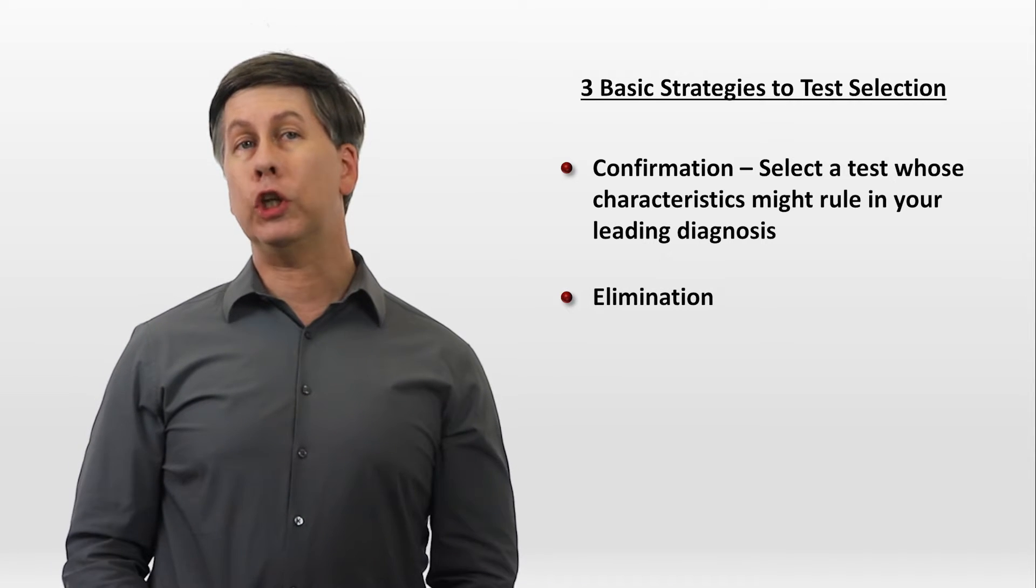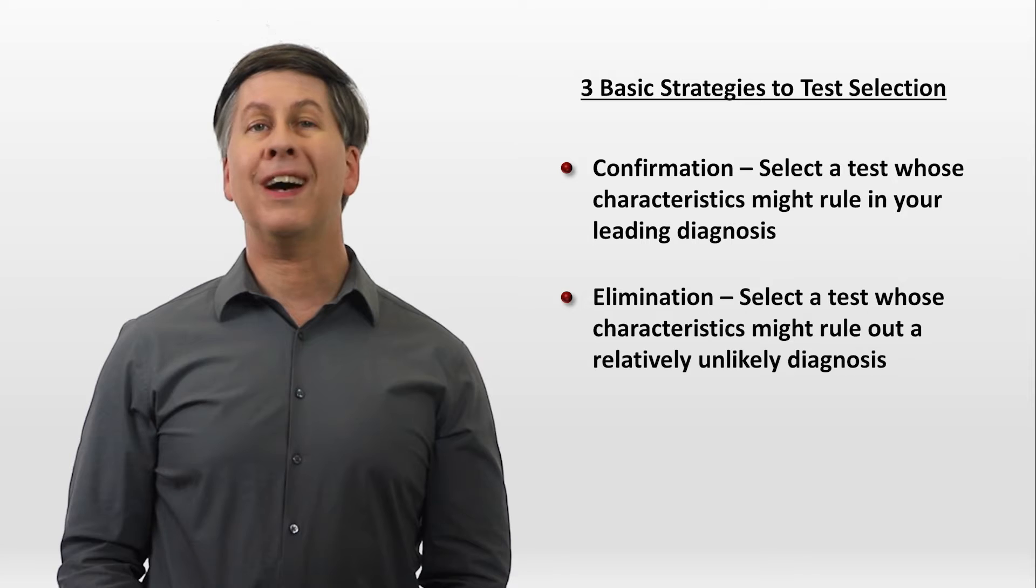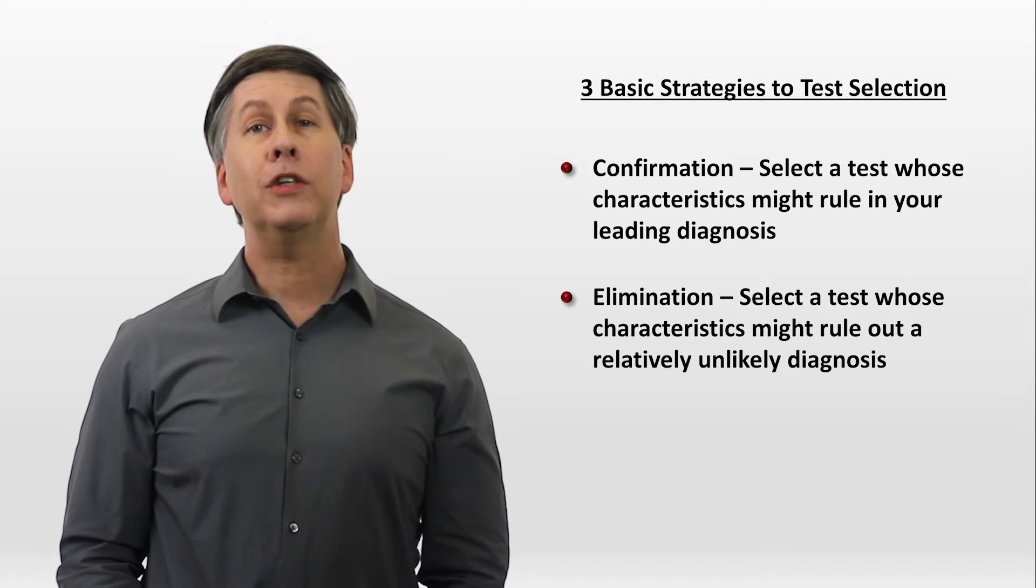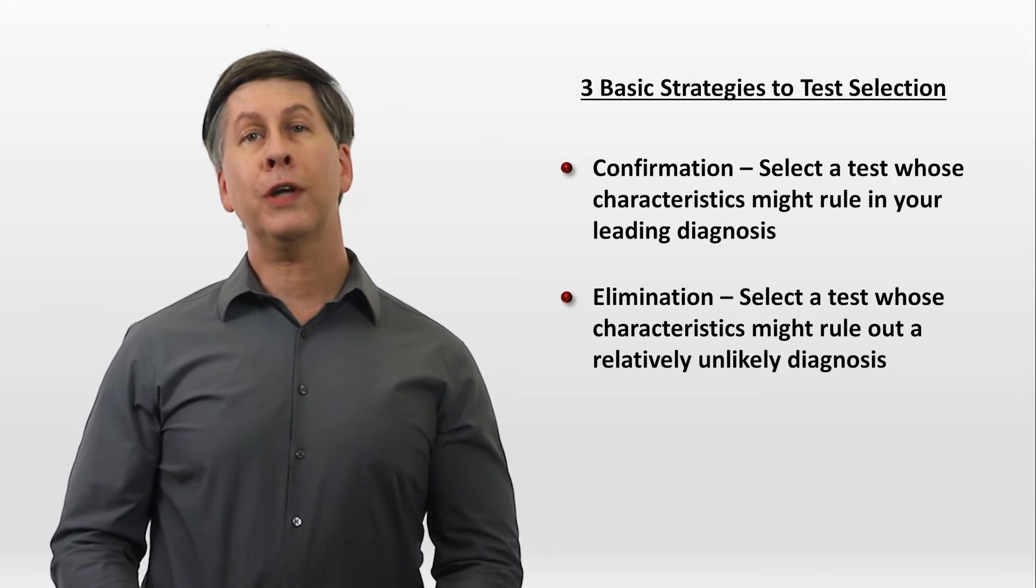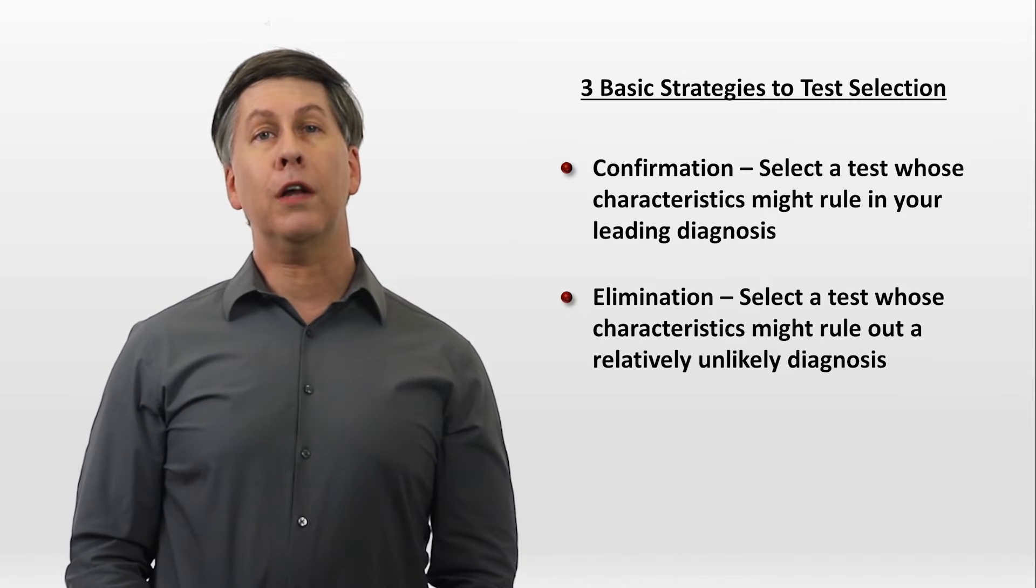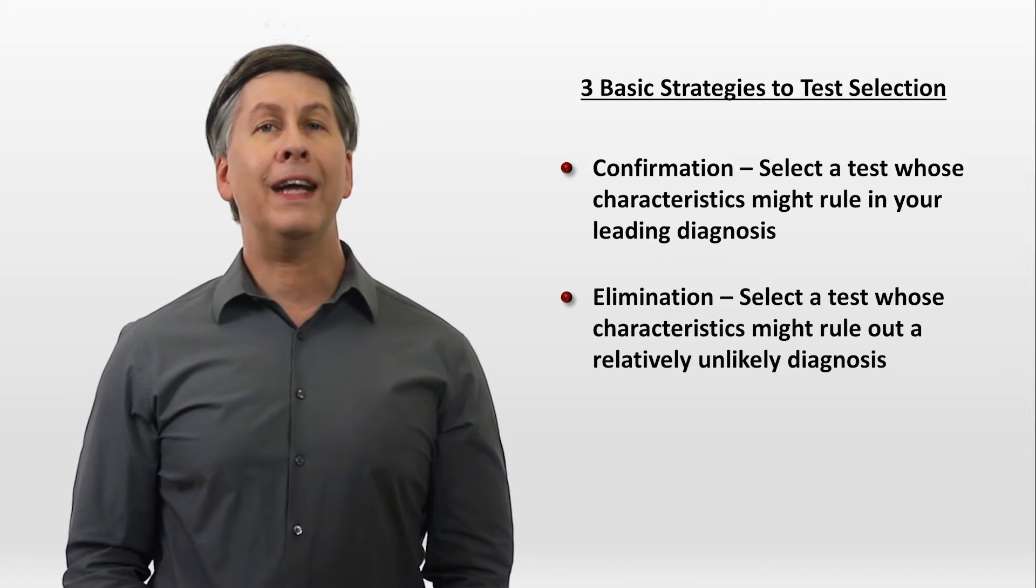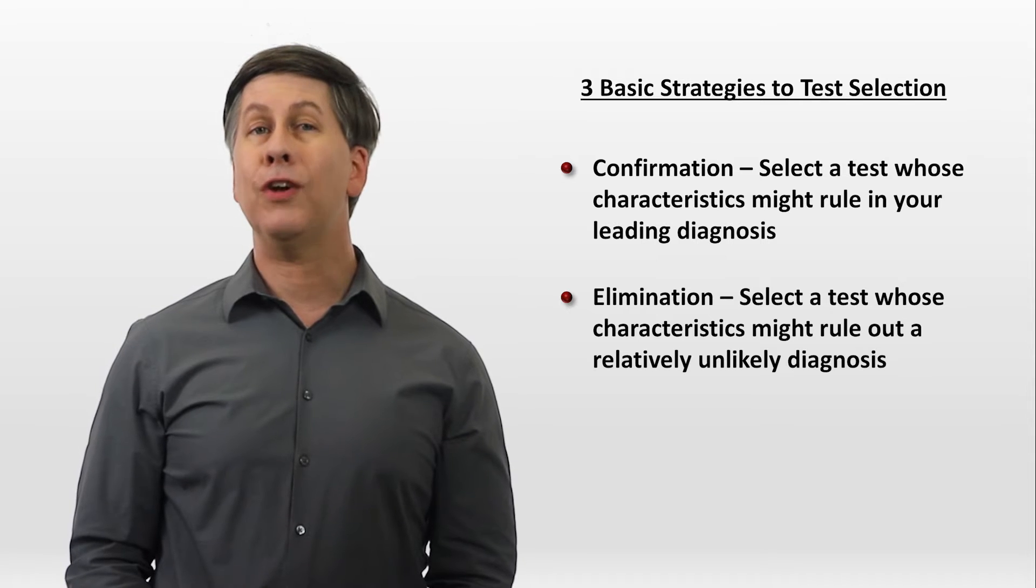With an elimination strategy, you select the test whose characteristics might rule out a relatively unlikely diagnosis. This is usually done for so-called don't-miss diagnoses, a plausible diagnosis that's unlikely but potentially rapidly fatal if missed. A common example of the elimination strategy is ordering a D-dimer test to rule out a pulmonary embolism for a patient in the ER with chest pain.